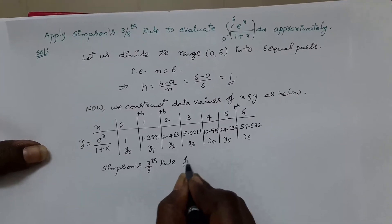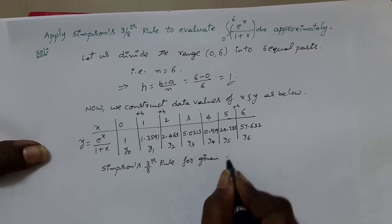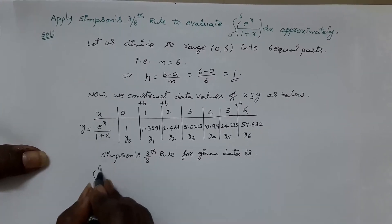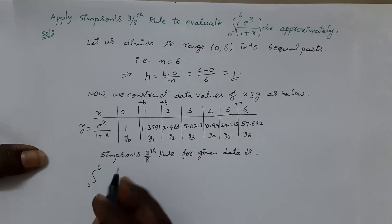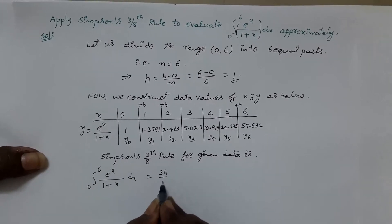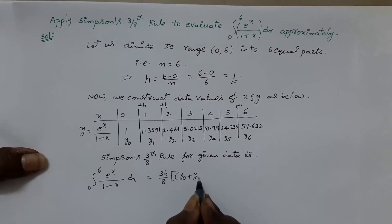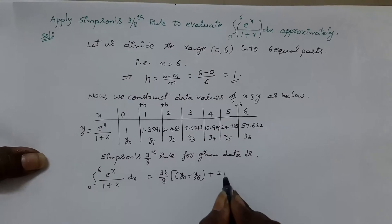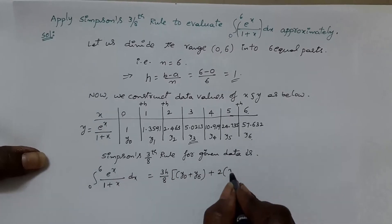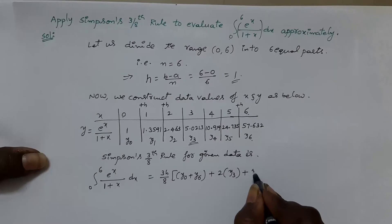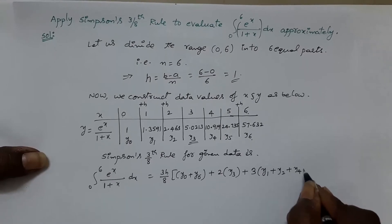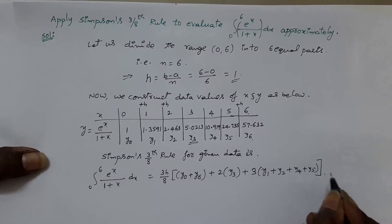For given data, integral 0 to 6, e power x by 1 plus x dx is equal to 3h by 8, sum of first and last ordinates, which are y0 plus y6, plus 2 into sum of ordinates which are multiple of 3 only between first and last, which is only y3 here, plus 3 times of sum of remaining all ordinates, which are y1 plus y2 plus y4 plus y5.